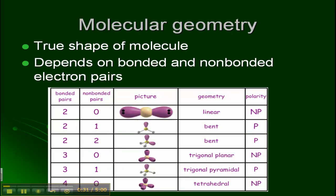The molecular geometry is the true shape of the molecule, and it's going to depend on those bonded and non-bonded electron pairs. So we did this table in class, and you should have this in your notes. Basically, you just have to sit down and memorize all these shapes so that you can identify what the shape of a molecule is going to be.